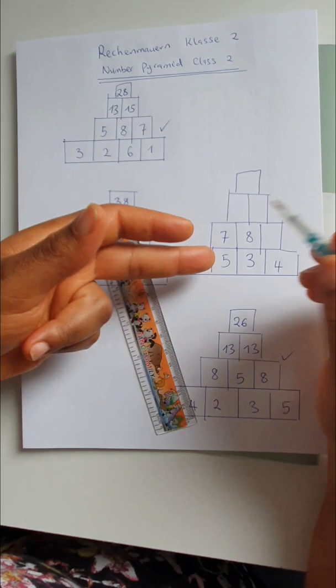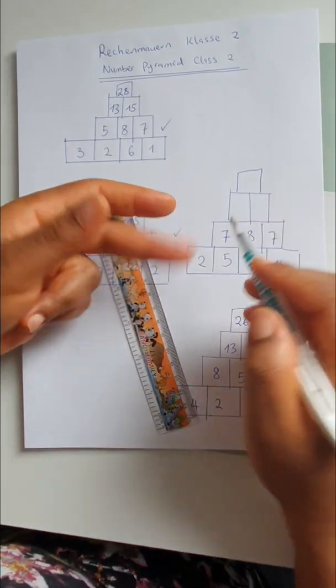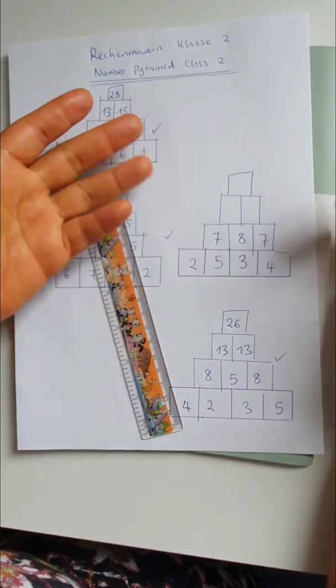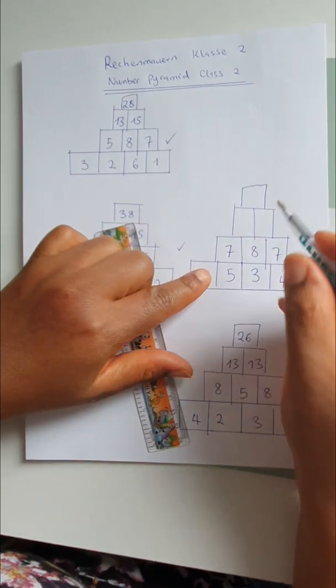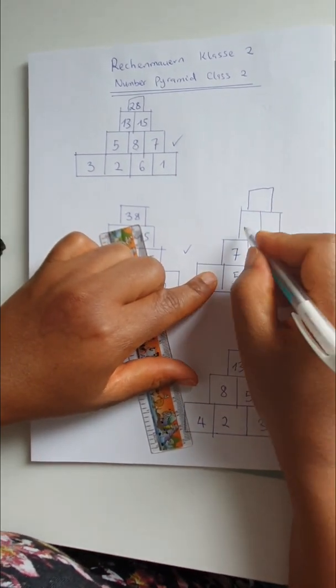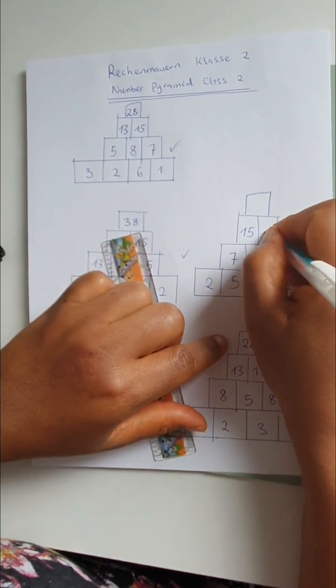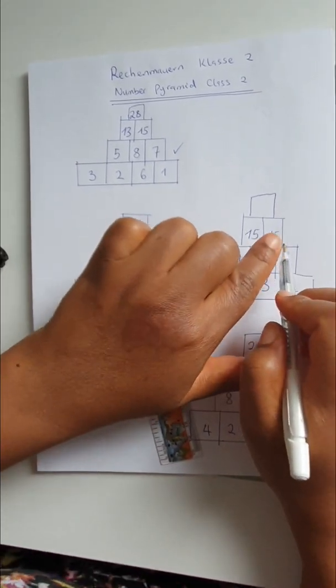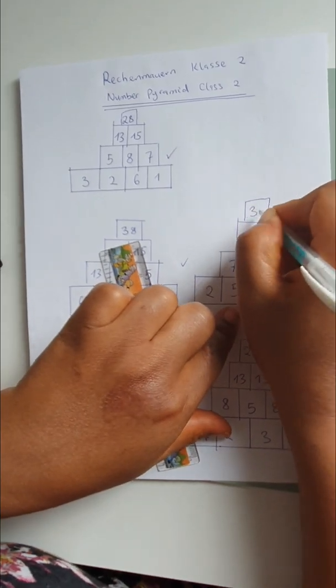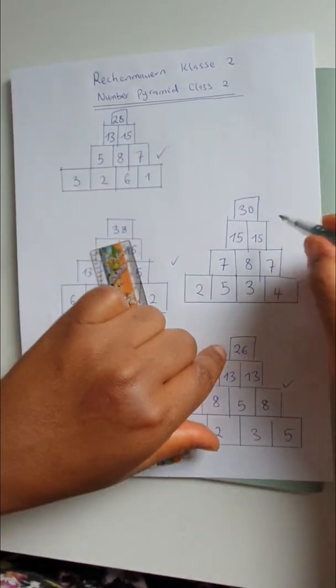And 3 plus 4 is 7. Then we can do the rest, it's now a little bit simpler. Then 7 plus 8 is 15. 8 plus 7 is also 15. And together, 15 plus 15 is 30. Check.